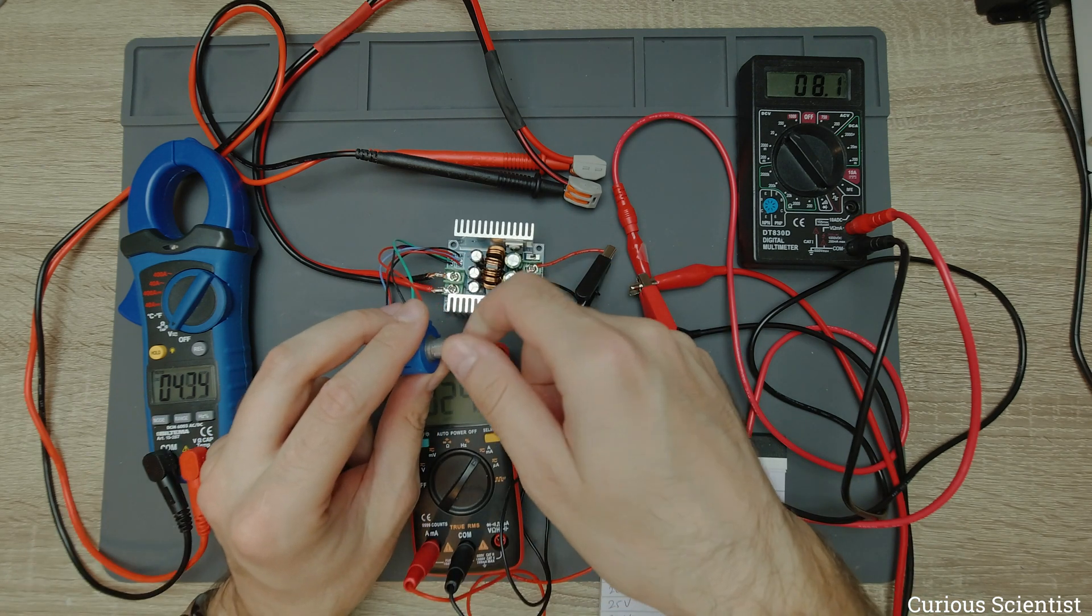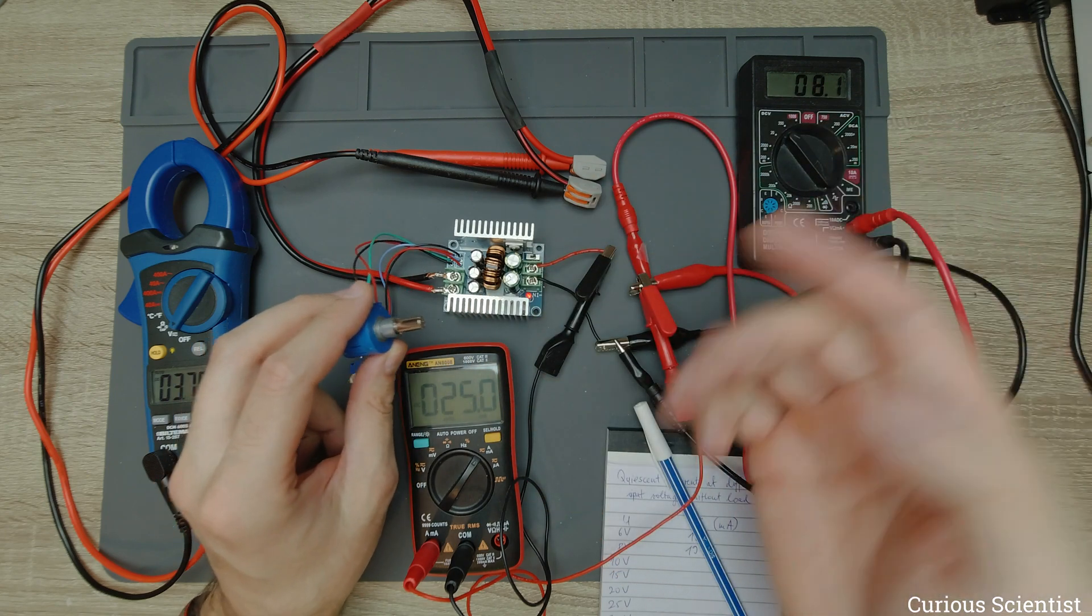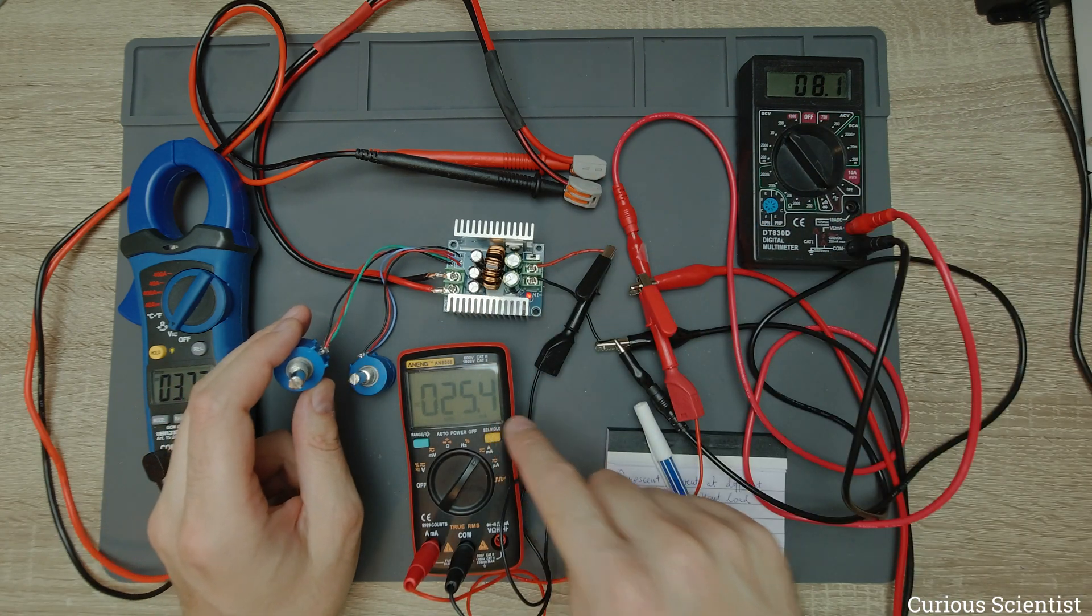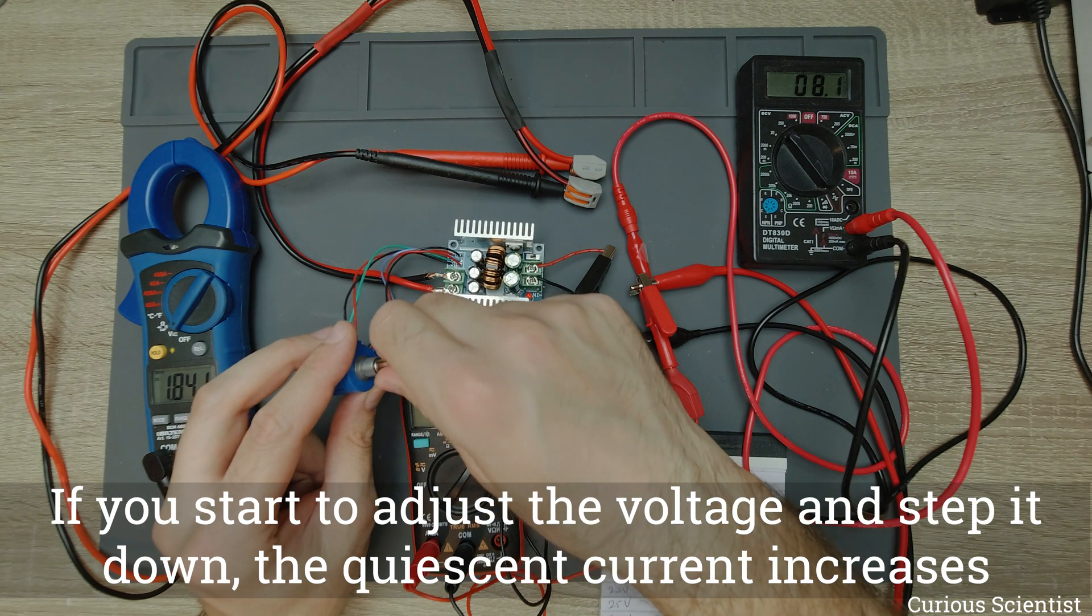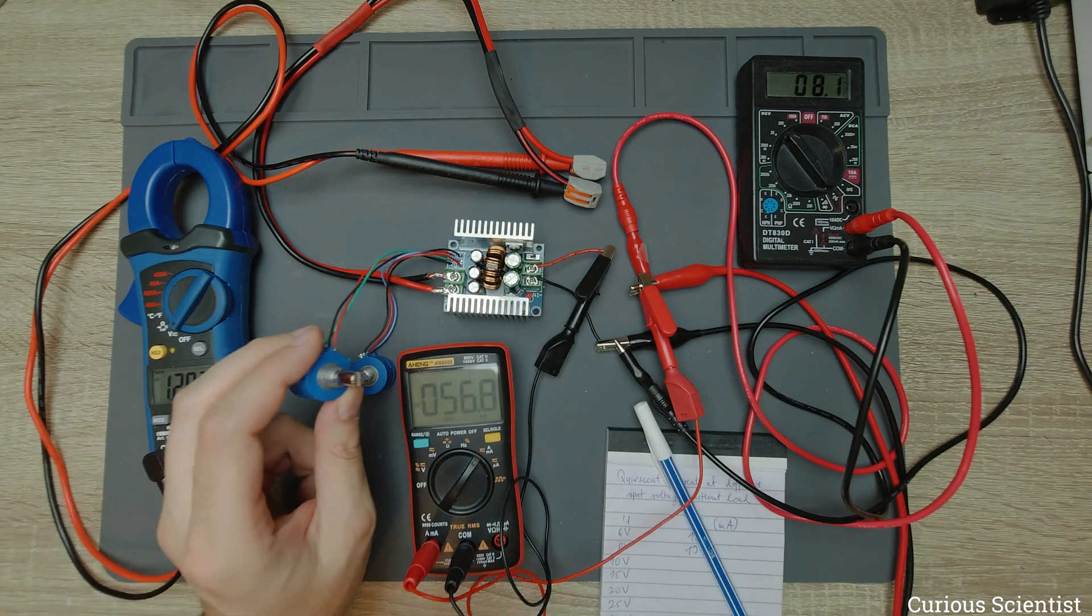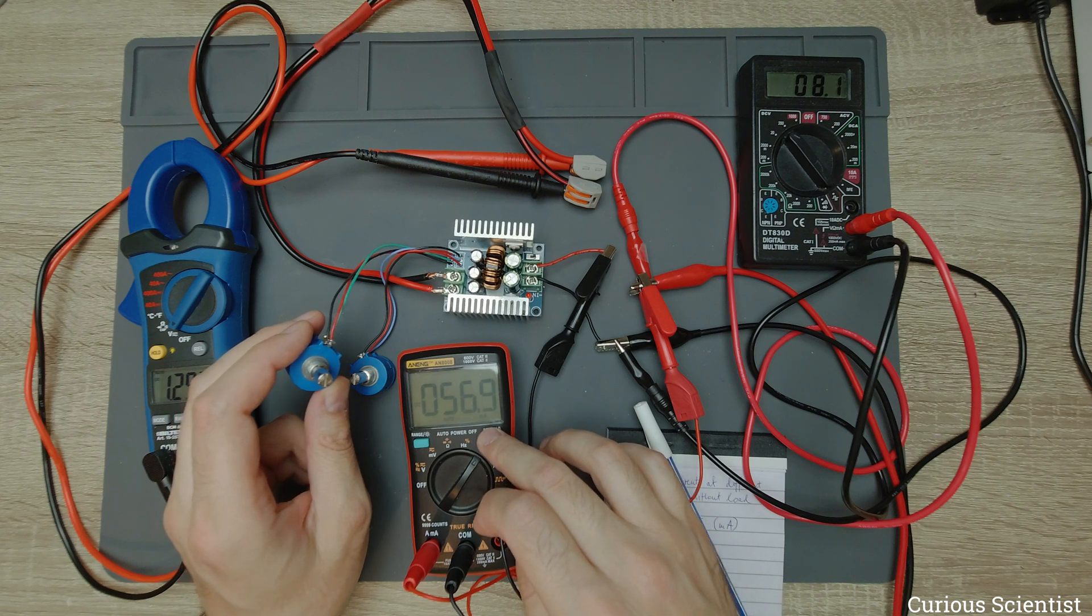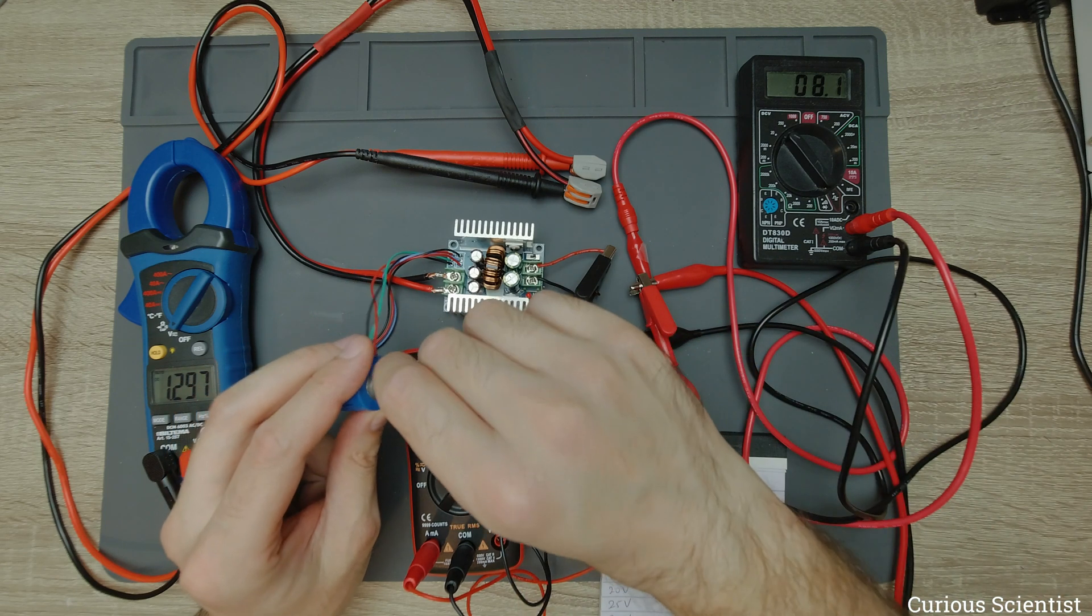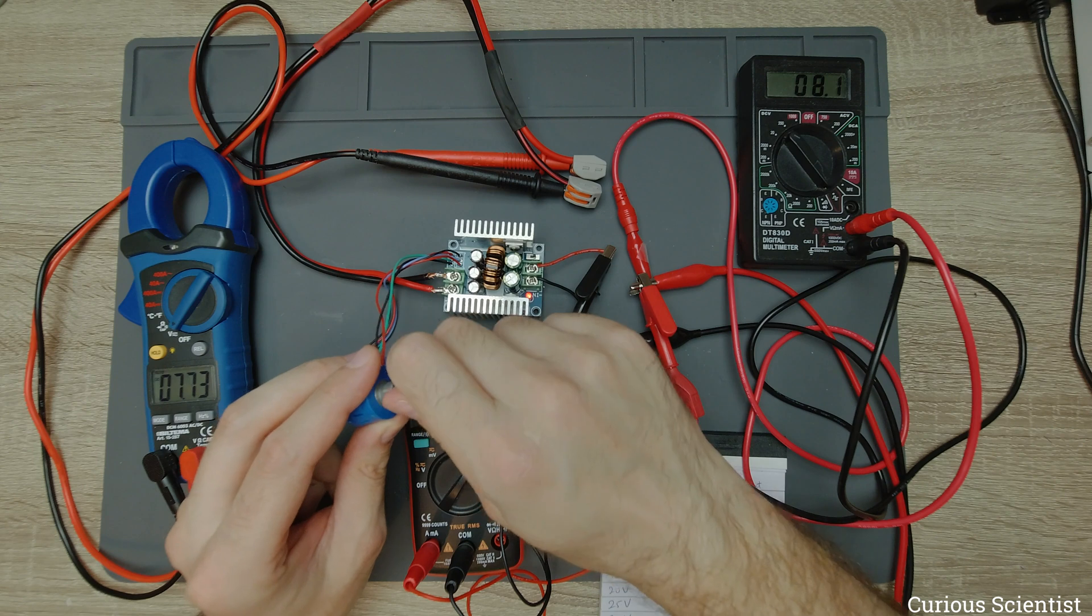Now I have a lower voltage, and now you have to notice that this quiescent current increases. If I drop the voltage to the minimum, then this goes to 57 milliamps.